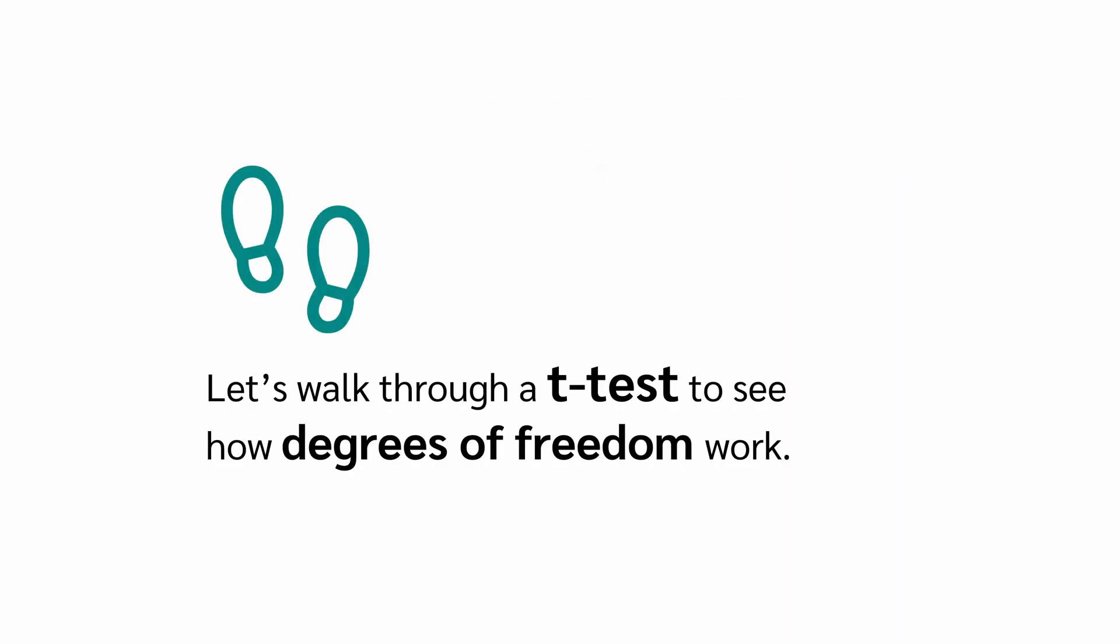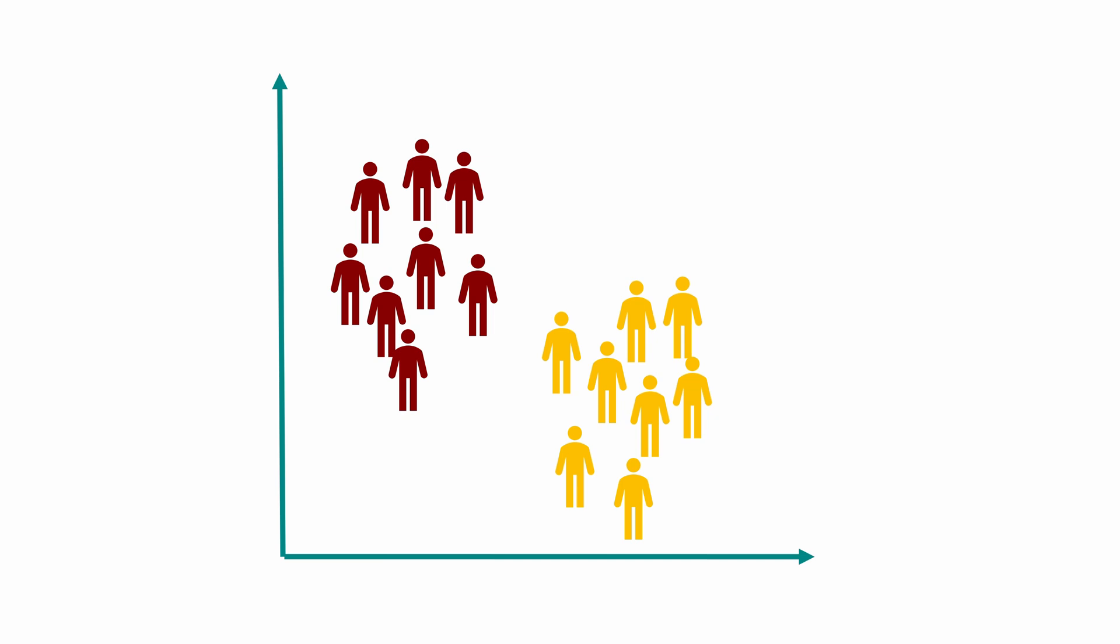Let's walk through a t-test together and see how degrees of freedom work. The t-test, more precisely the independent samples t-test, checks whether two groups, group A and group B, differ significantly. So, first we need two samples.